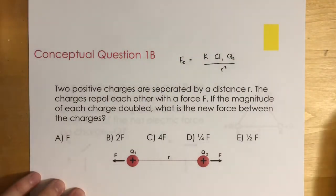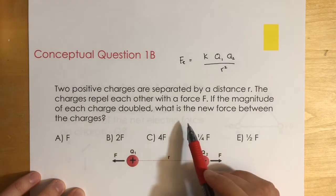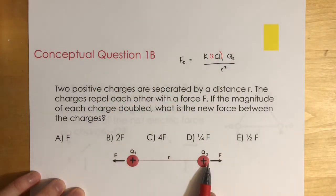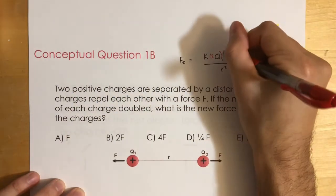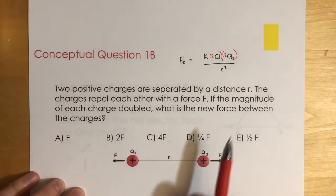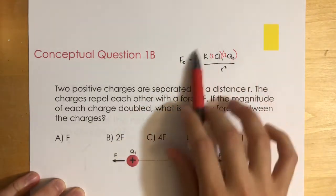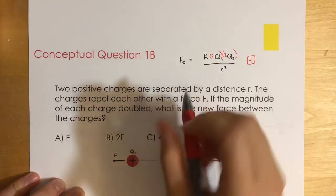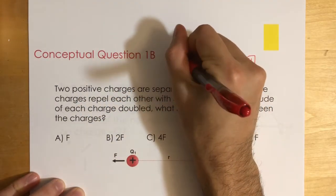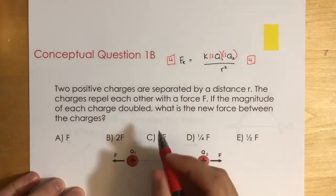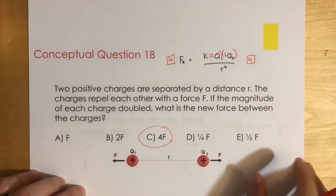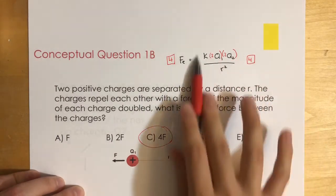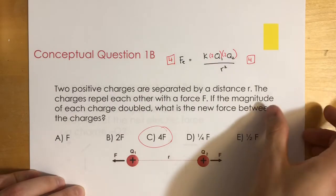What we notice is that q1 changes by a factor of two, and q2 also doubles, changing by a factor of two. So the product q1·q2 changes by a factor of four, which means the force changes by a factor of four. The new force of electricity is equal to 4F. This is a very common question — whatever factor one side changes by, the force changes by that same amount.